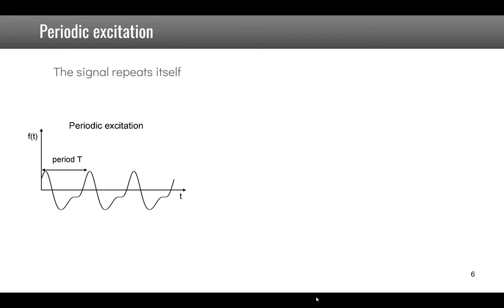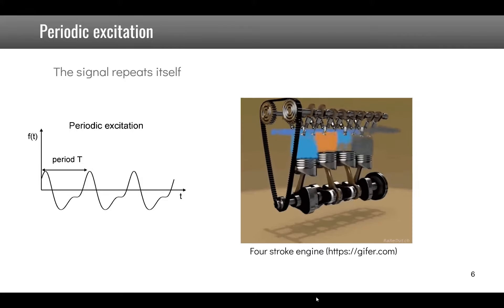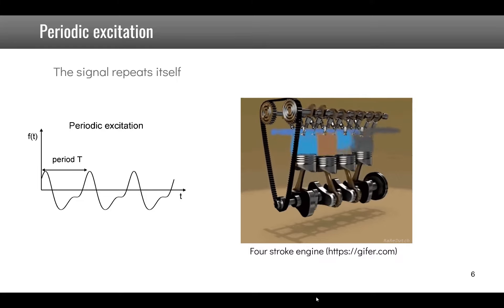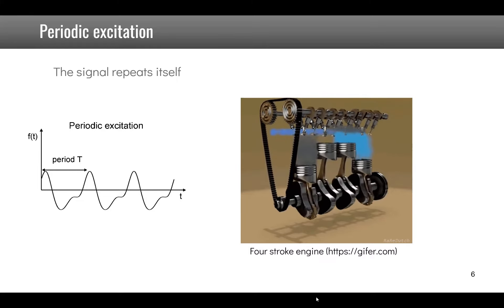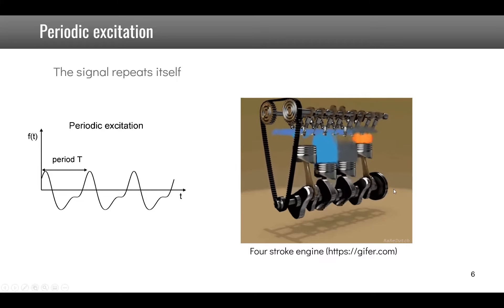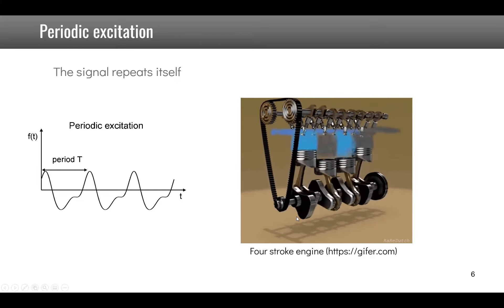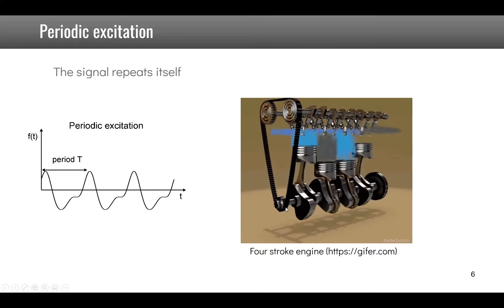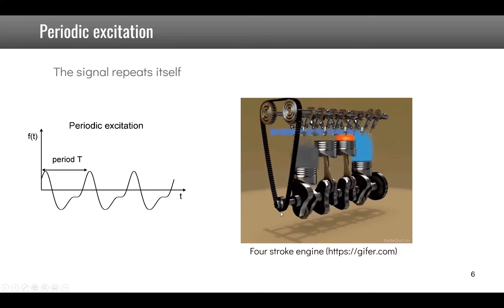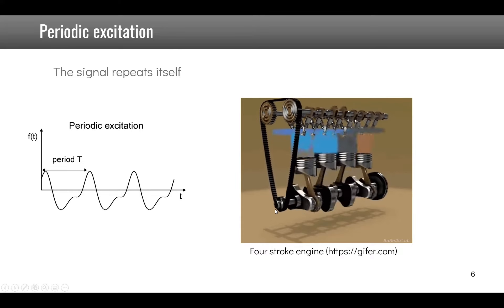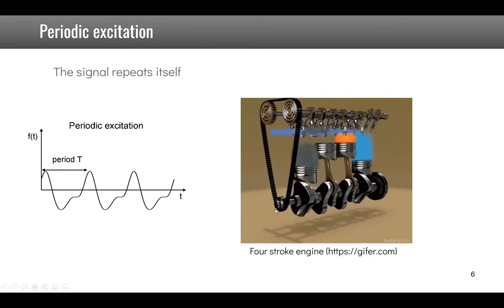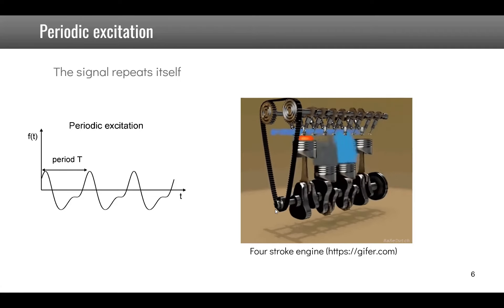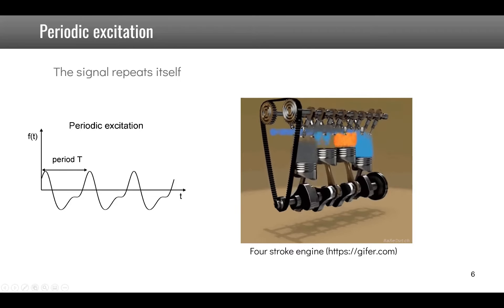A second example of periodic excitation is engines. In engines, you don't have a pure sine or cosine excitation, but every full turn of the crank produces the same signal, making it a periodic excitation.